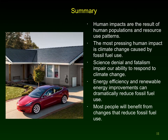In summary, human impacts result from population size and resource use patterns. The most pressing impact is climate change caused by fossil fuel use. Science denial and fatalism impair our ability to respond. Energy efficiency and renewable energy improvements can dramatically reduce fossil fuel use, and most people will benefit — they'll save money, things will be more reliable, and they'll work better. When you get out of college, it's likely you'll have an electric or hybrid car and solar shingles on your roof producing electricity. It won't be the end of the world — just minor changes, and things will get better.